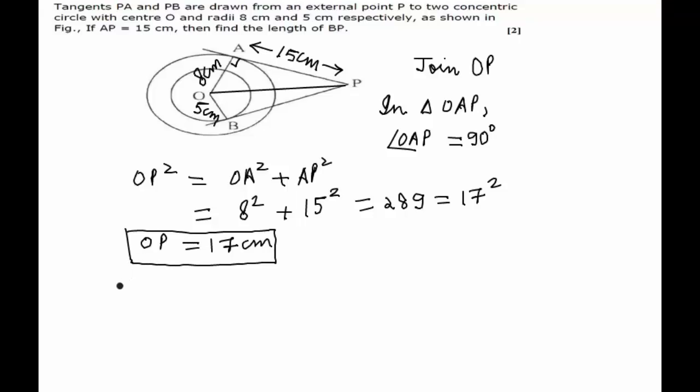Applying the same logic in another triangle, triangle OBP where angle OBP is 90 degrees as the radius is perpendicular to the tangents. We apply Pythagoras theorem,